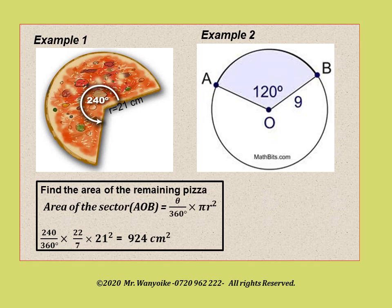Students, what would be the area of the sector that is shaded in example 2 where you have angle AOB as 120 degrees? You'll do the same way. It is 120 over 360 times 22 over 7 times 9 times 9. You can do this at your own time.